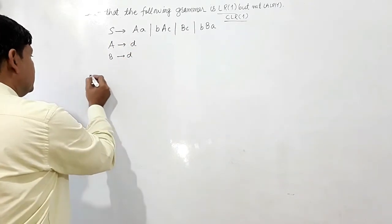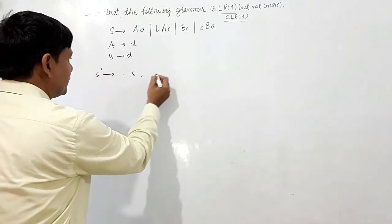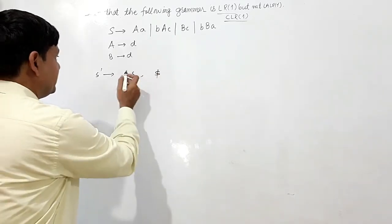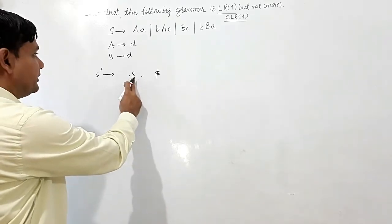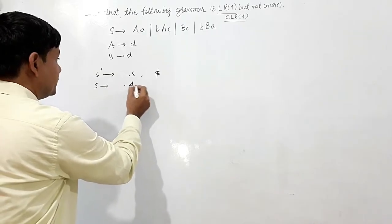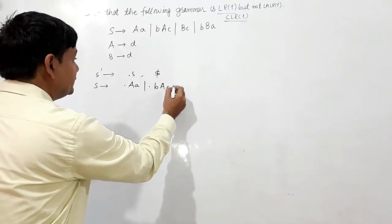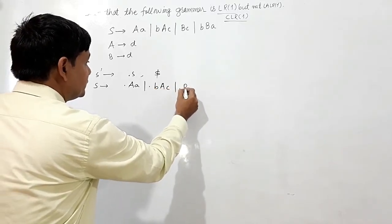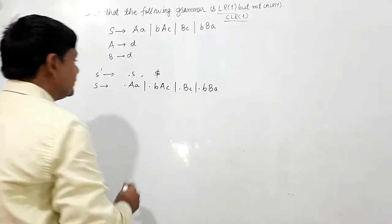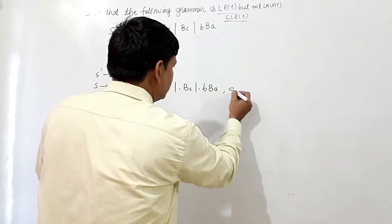Now we shall use augmented production here. S' will give dot S, with lookahead dollar. This dot is coming before the non-terminal S, so I have to write the productions of S. S will give dot AA, or dot BAC, or dot BC, or dot BBA. What is remaining after this S? That is dollar. So its lookahead will be dollar.